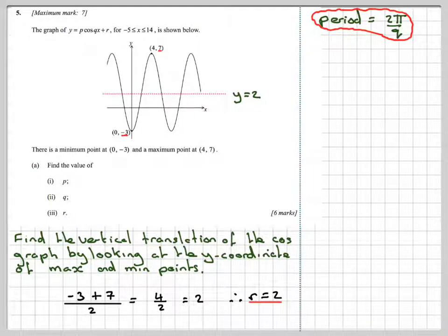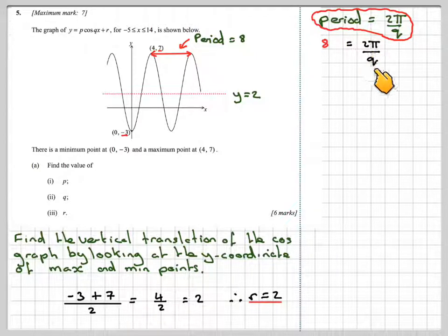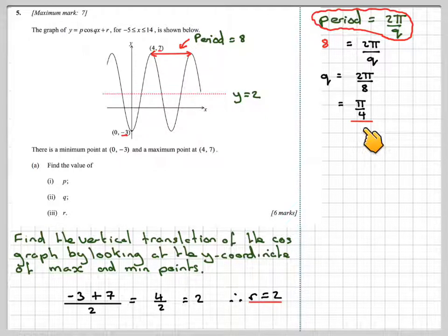What is the period of this graph? If we look between maximum and maximum point, the difference between the x coordinate from here to here is 4. Therefore, the period will be 2 times that, which is 8. So 8 equals 2π divided by q. Rearranging that, q is 2π divided by 8, which is π by 4.